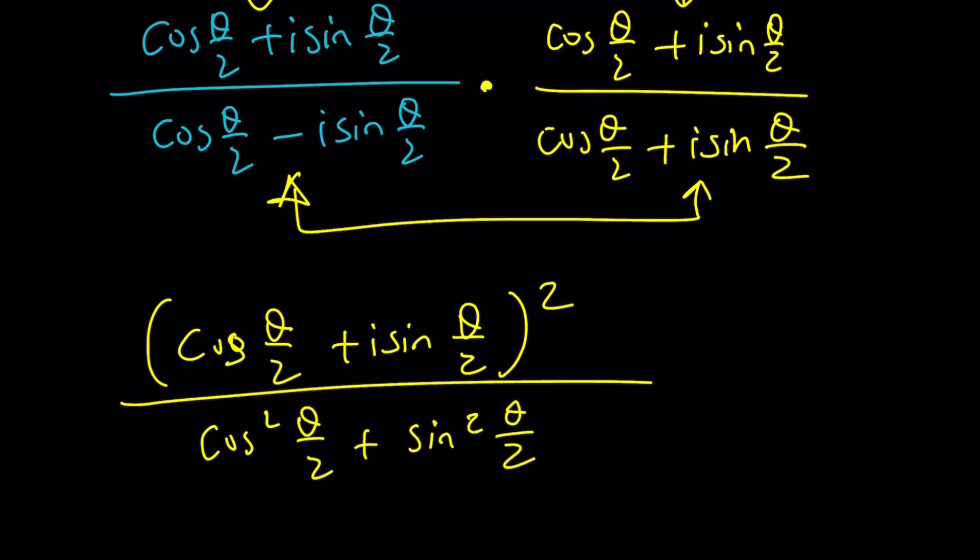But wait a minute. Isn't sine squared plus cosine squared equal to 1? Yes, it is. So we don't have to worry about this. This is just equal to 1. And the answer is the numerator.